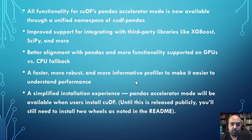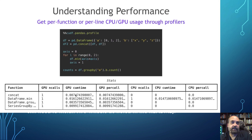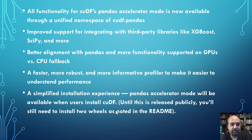There's also a faster, more robust formative profiler — you can see it here showing you which parts of the code are actually running on GPU versus CPU. You can do that by printing the types and it gives you a nice table at the bottom. Simplified installation process — I showed you that earlier — it's super, super easy.